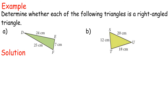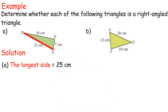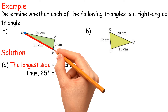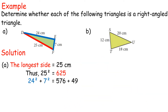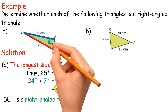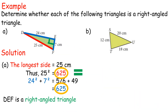Solution A. The longest side = 25 centimeters. Thus, 25² = 625. 24² + 7² = 576 + 49 = 625. Hence, triangle DEF is a right-angled triangle.